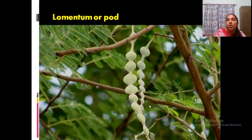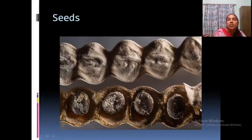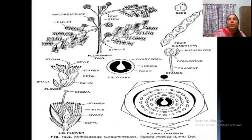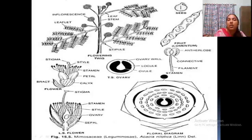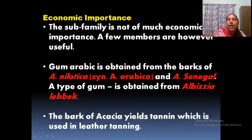Thorns are present in the pulvinus region. The seeds are in single-seeded compartments — that is the lomentum. This is Acacia nilotica: see the flowers in heads, the inflorescence, and an indefinite number of stamens. Monocarpellary ovary with indefinite number of stamens.